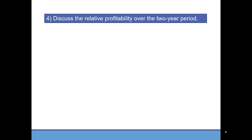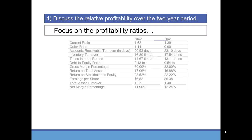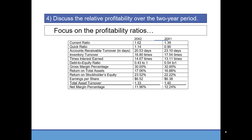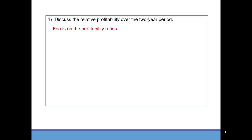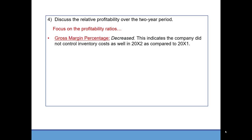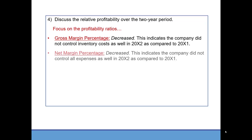Discuss the relative profitability over the two-year period. We'll look at our profitability ratios. The most common measures are gross margin percentage, return on assets, return on stockholders' equity, and net margin percentage. The gross margin percentage decreased, meaning the company did not control inventory costs as well in the most recent year. Net margin also decreased, indicating the company did not control all expenses as well in 20x2. So cost control seemed to be a bit of a problem in the most recent year.